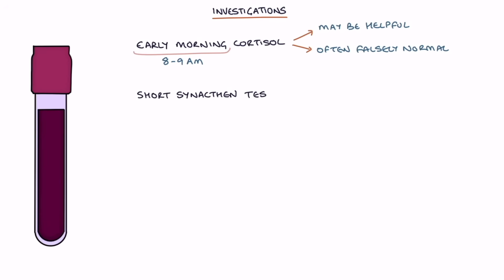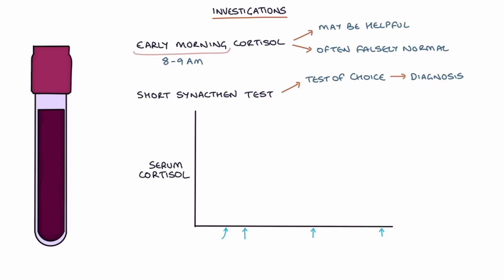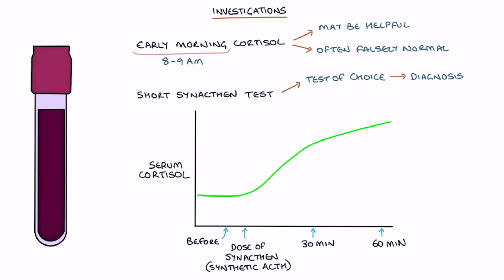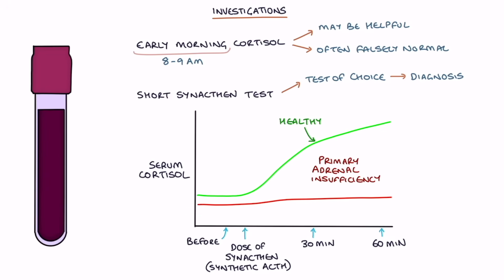The short synactin test is the test of choice for diagnosing adrenal insufficiency. This involves giving a dose of synactin, which is synthetic ACTH, and monitoring the blood cortisol before and at 30 minutes and 60 minutes after the dose. When the adrenal glands are healthy, the synthetic ACTH stimulates the release of cortisol. In primary adrenal insufficiency, where the adrenal glands are damaged, the ACTH does not stimulate the release of cortisol. A failure of the cortisol levels to at least double indicates primary adrenal insufficiency.